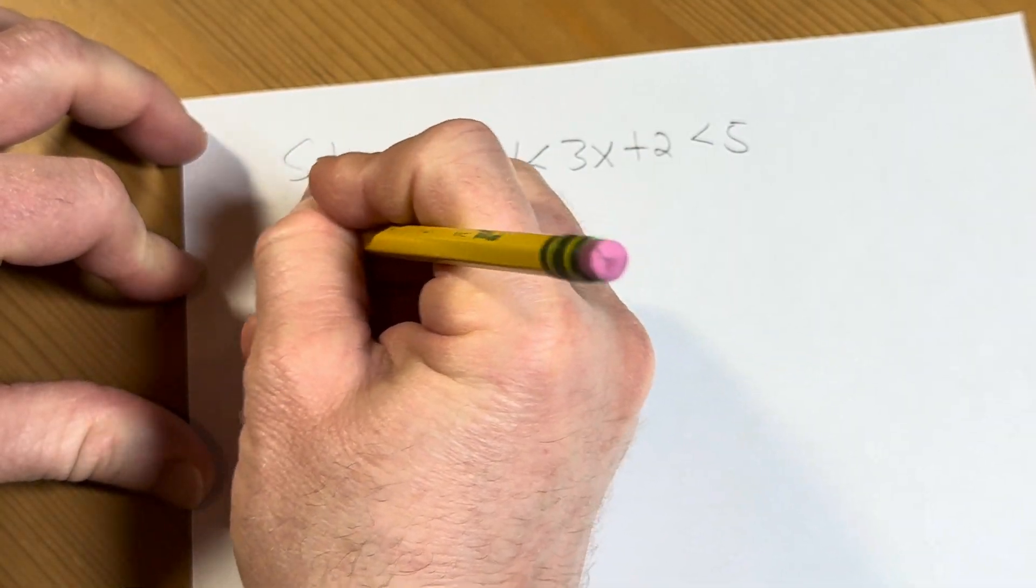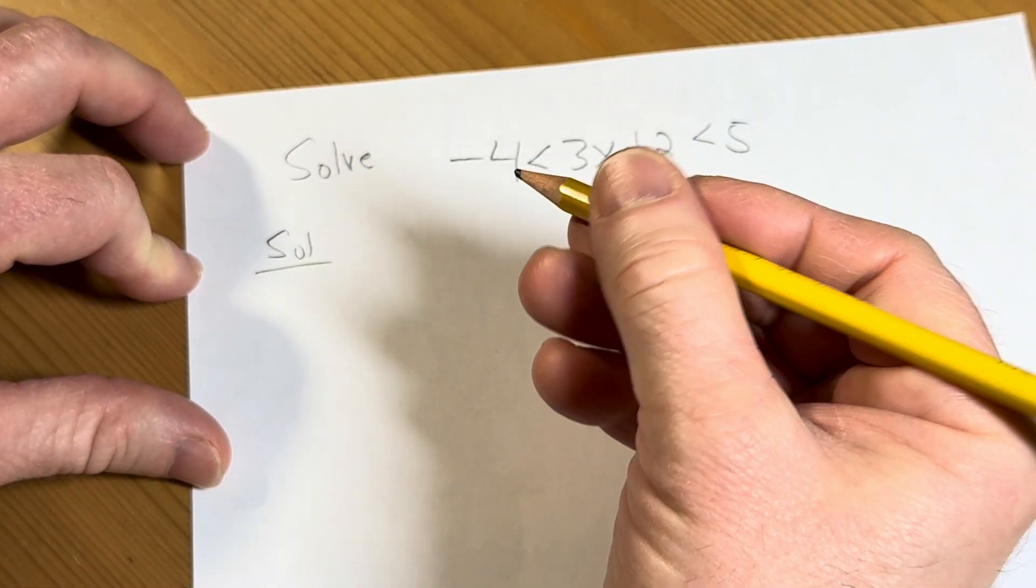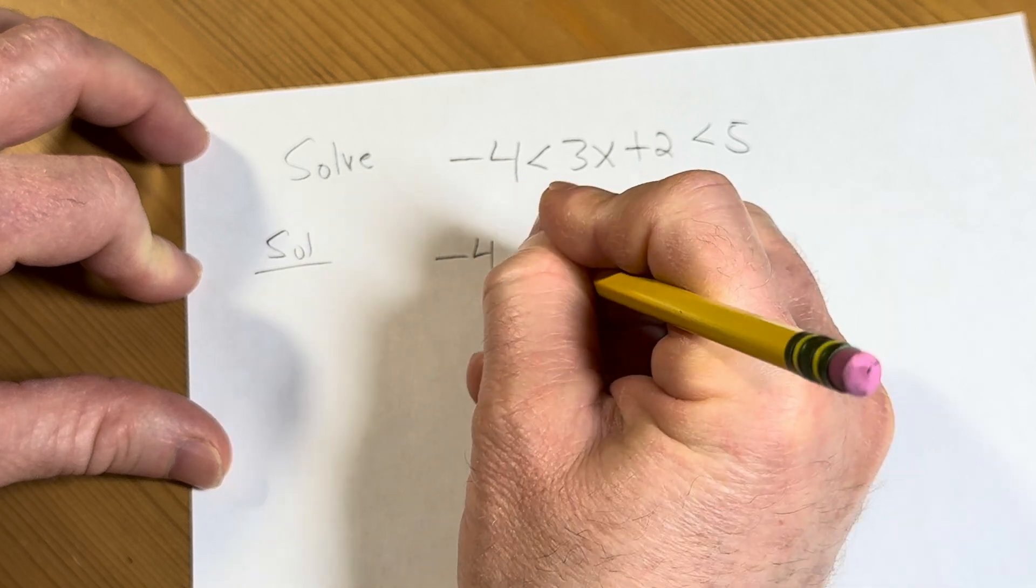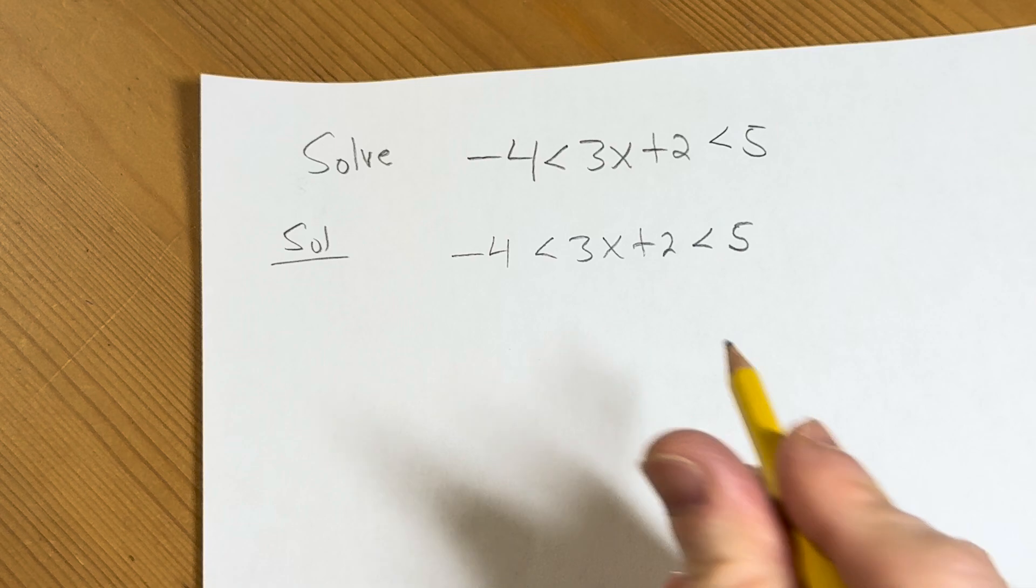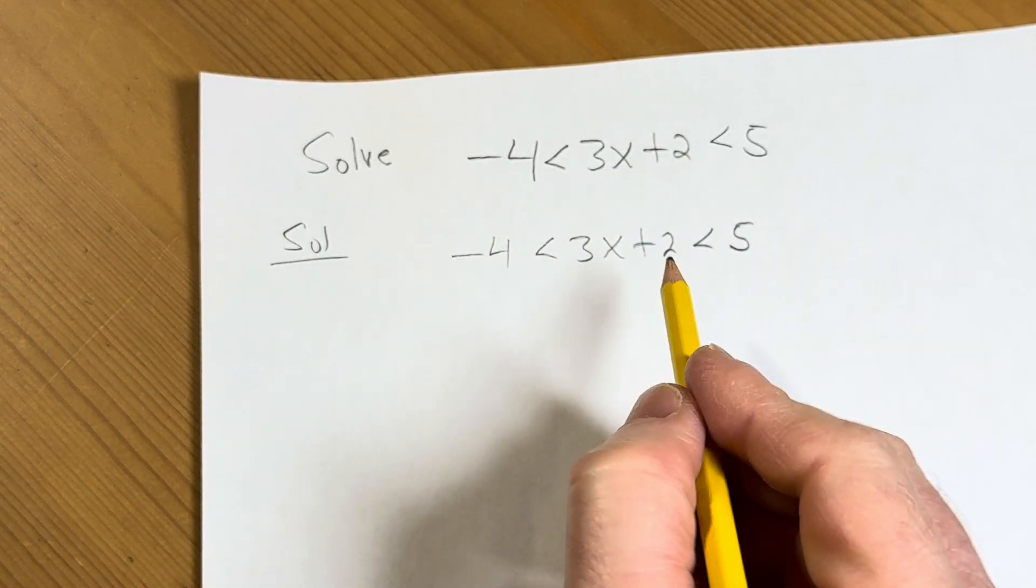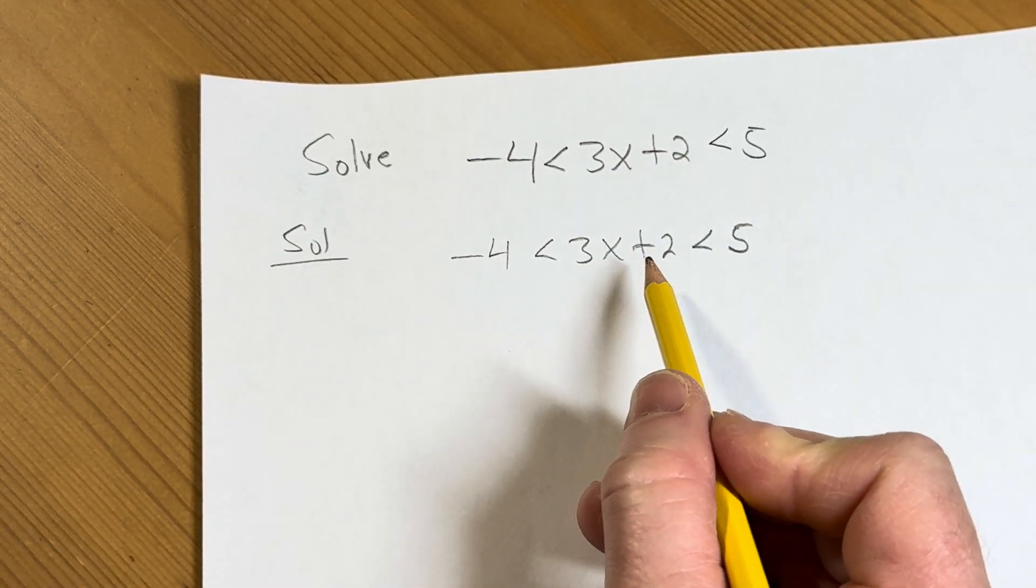Solution. So I'm going to start by writing it down one more time: negative 4 less than 3x plus 2 less than 5. And so to solve this, what you want to do is basically you want to get the x by itself here in the middle.